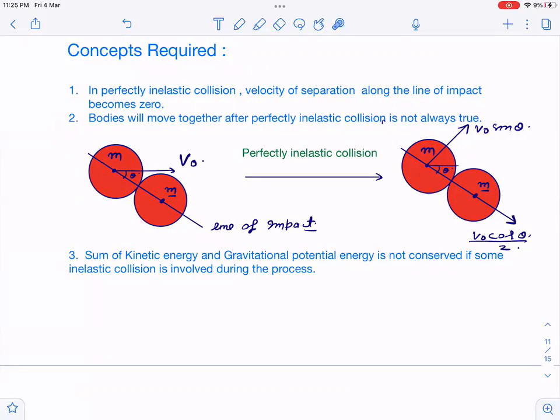After collision, let's take components: v₀ cos theta along the line of impact and v₀ sin theta perpendicular to it. Forces are only generated along the line of impact. The perpendicular component v₀ sin theta remains as it is because no force acts in that direction. According to the definition, for perfectly inelastic collision, velocity of separation along the line of impact becomes zero.